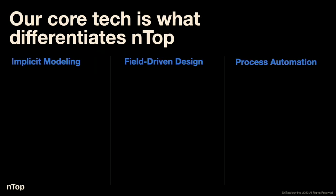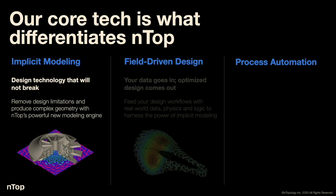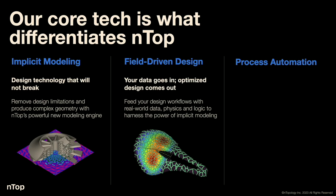Our core tech is really what differentiates NTOP from other software. Our first pillar is implicit modeling — a volumetric technology that's a little different from BREP or mesh. It's a technology we're interested in because it won't break; it always produces a solid and a void, which is really important for knowing if something is going to be manufacturable in the physical world. You can use real-world data — physical data, simulation data, or manually entered data — to drive the behaviors of your design.